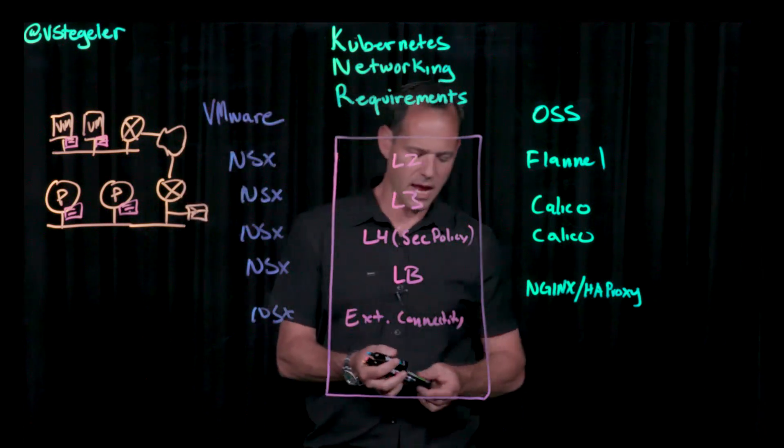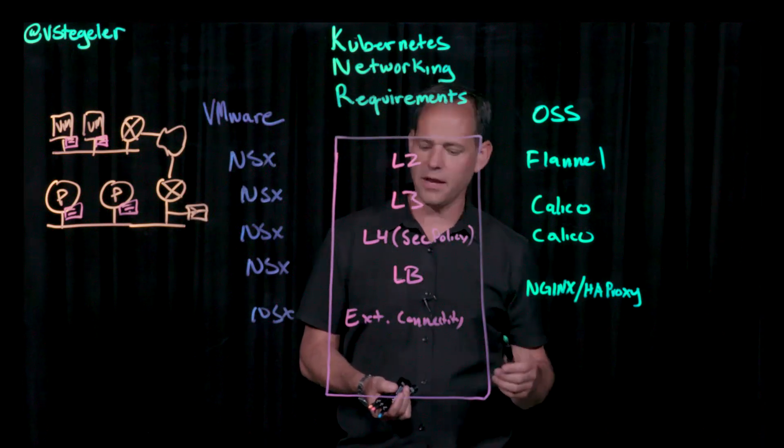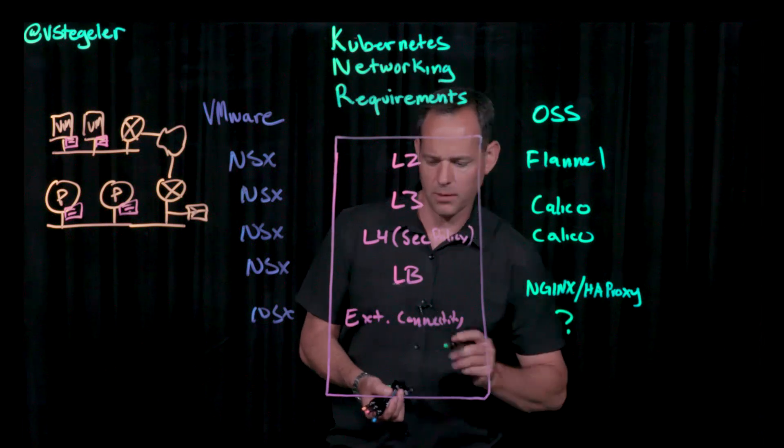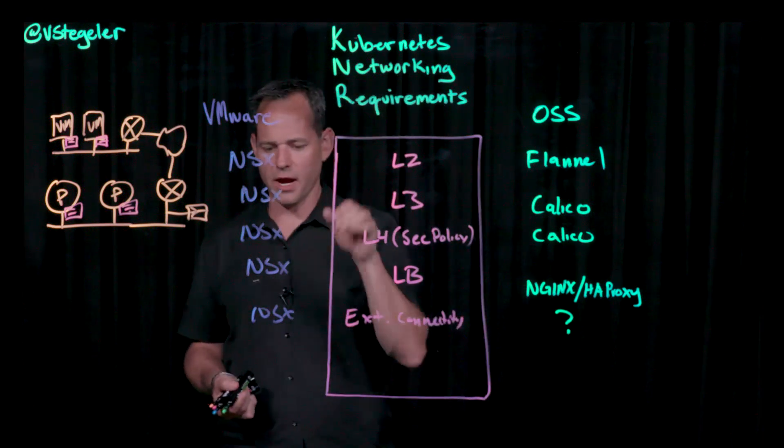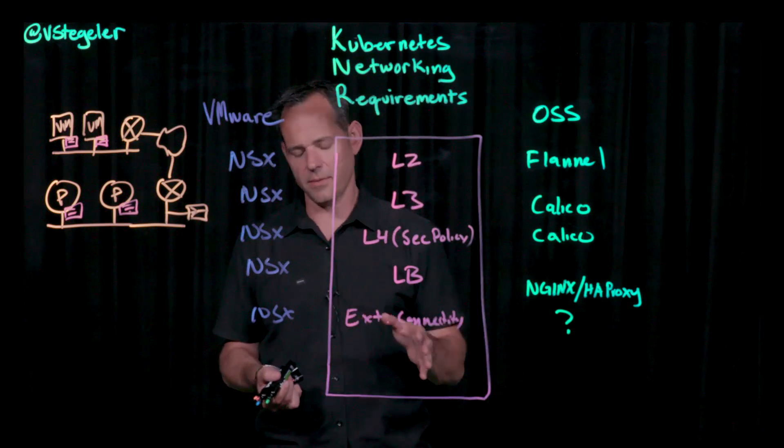And NSX can definitely provide that. On the open source side, it's going to be something that lives outside of the core Kubernetes networking piece. And so this kind of basically summarizes the connectivity options here.